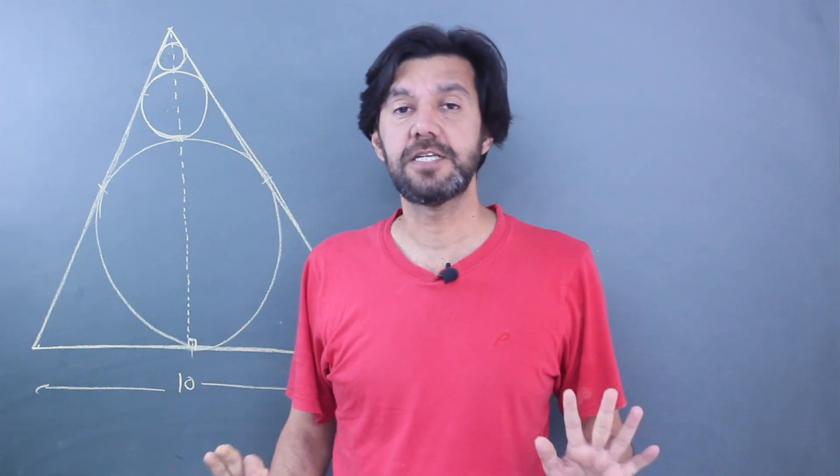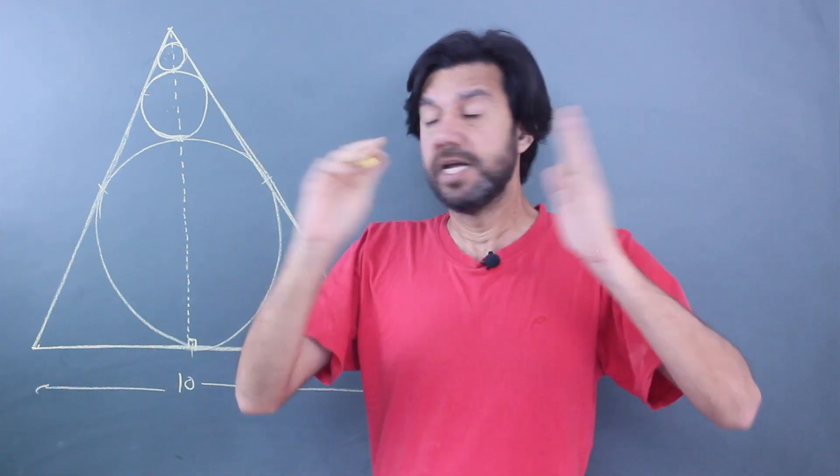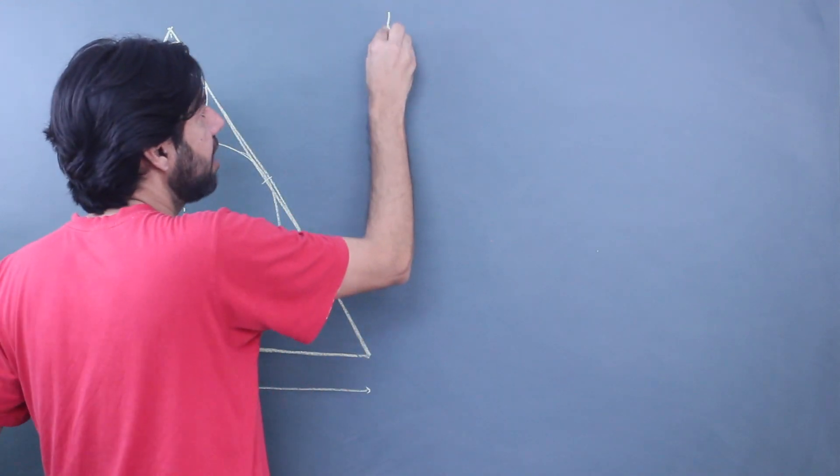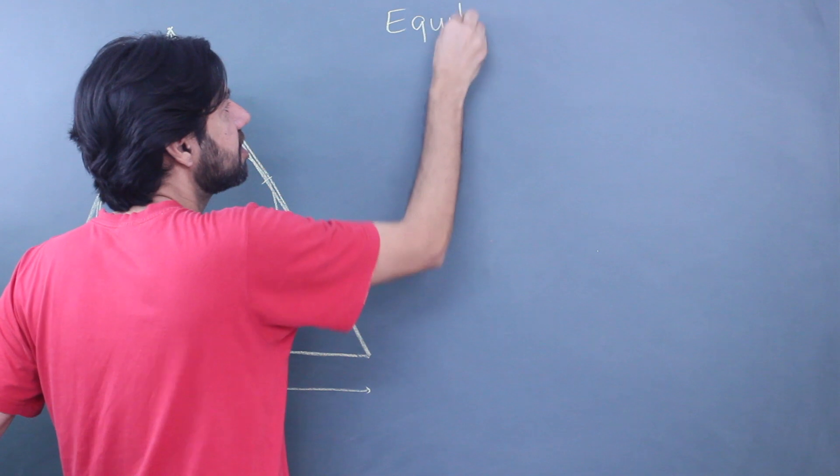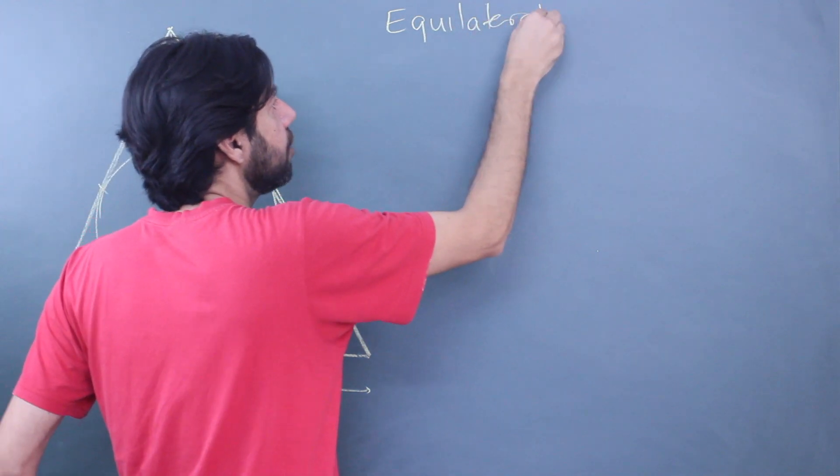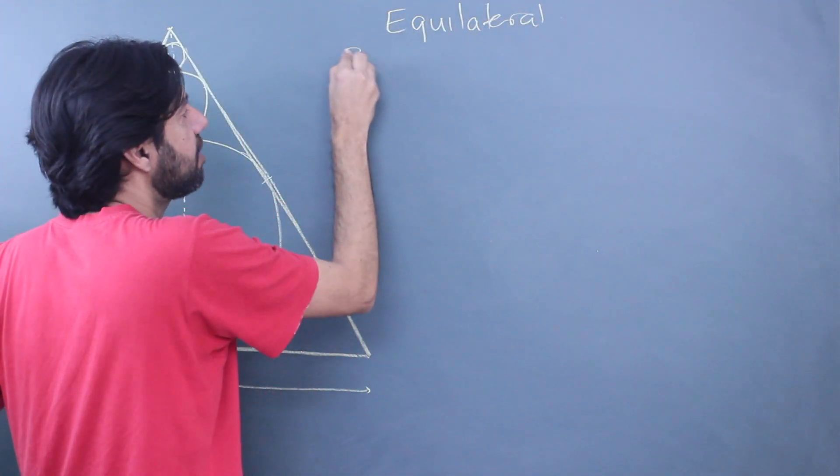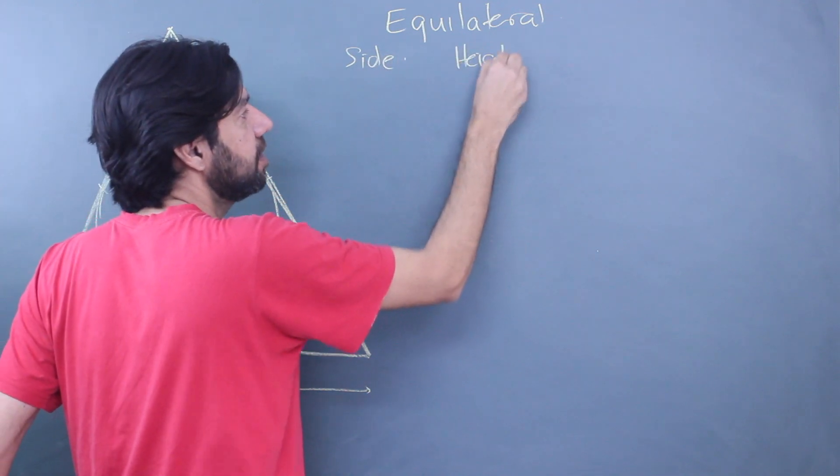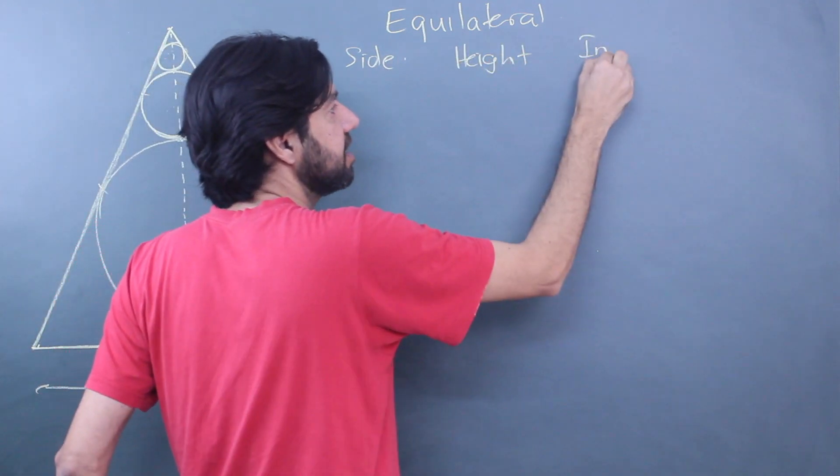What I want to explain in this session is: it's an equilateral triangle, everything about an equilateral triangle should be known, and you can solve this question simply by knowing the relations between side, height, altitude, and the inradius.